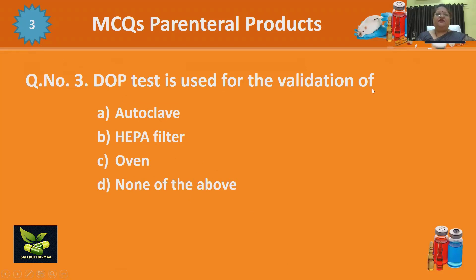Third question: the DOPE test is used for the validation of — autoclave, HEPA filter, oven, or none of the above. The full form of DOPE is dioctyl phthalate test. As we have already studied, the DOPE test is used for the validation of the HEPA filter — high efficiency particulate air filter.